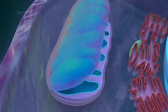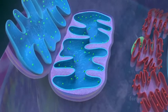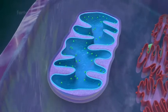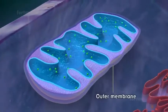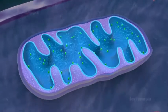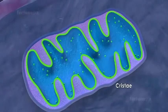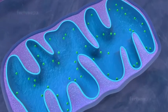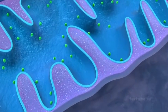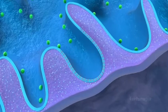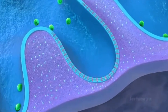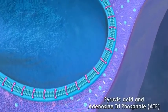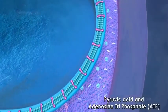Mitochondria are bound by two membranes. Each membrane is a phospholipid bilayer with embedded proteins. The outer membrane is smooth, while the inner membrane has many inverted folds called cristae. The folds increase the surface area and are the working surfaces for mitochondrial reactions. The inner membrane is selectively permeable to certain molecules such as pyruvic acid and adenosine triphosphate (ATP).